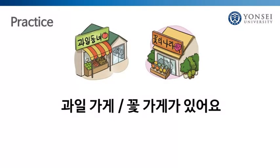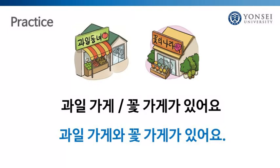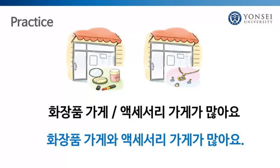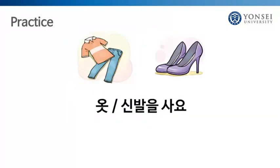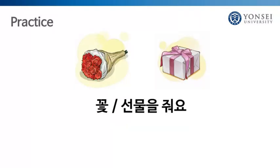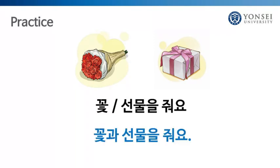Now it's your turn to practice. Make a sentence with the following words. 과일가게, 꽃가게가 있어요 → 과일가게와 꽃가게가 있어요. 화장품가게, 액세서리 가게가 많아요 → 화장품가게와 액세서리 가게가 많아요. 옷, 신발을 사요 → 옷과 신발을 사요. 꽃, 선물을 줘요 → 꽃과 선물을 줘요.